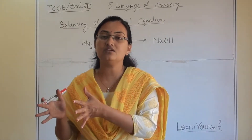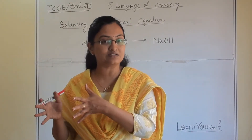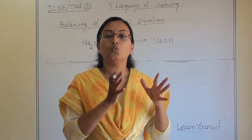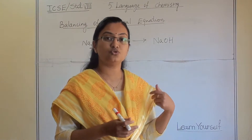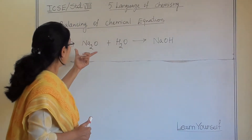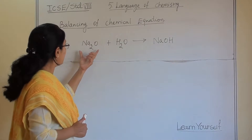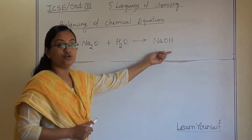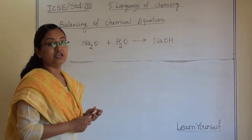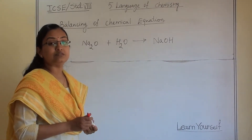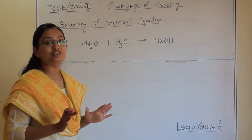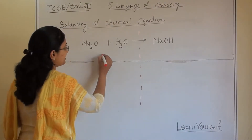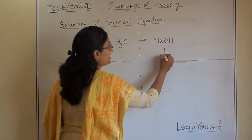We have to check the number of atoms present on the reactant side and make it the same as the products. So let us see. First example: sodium oxide plus water gives us sodium hydroxide. Let us first check whether this equation is balanced or not. This is the reactant side and this is the product side.